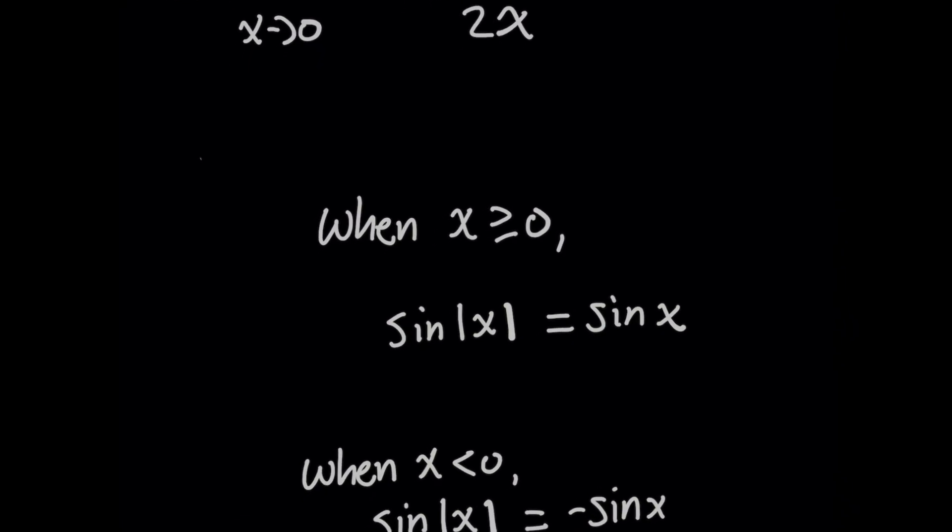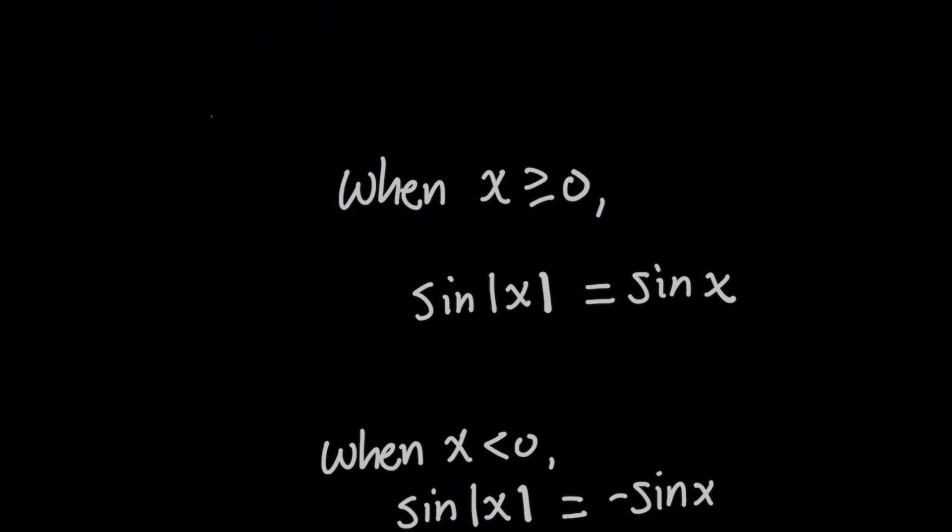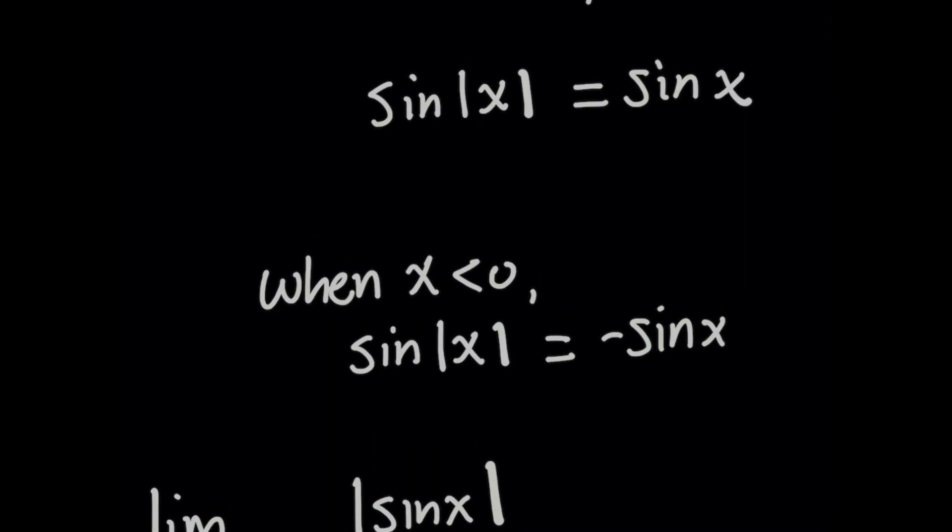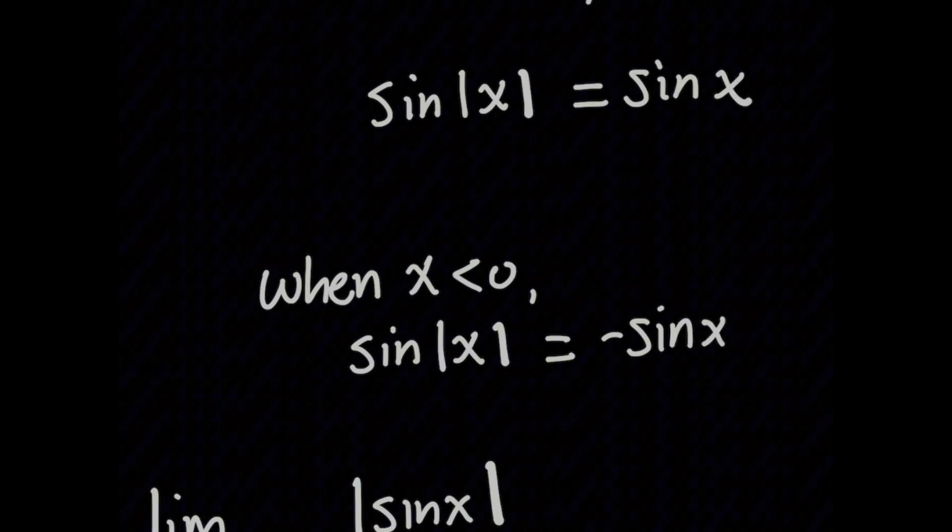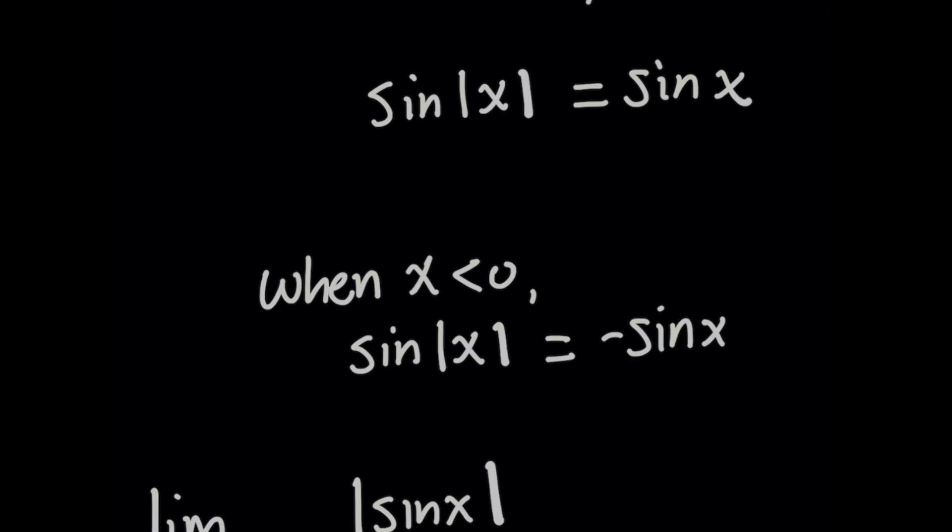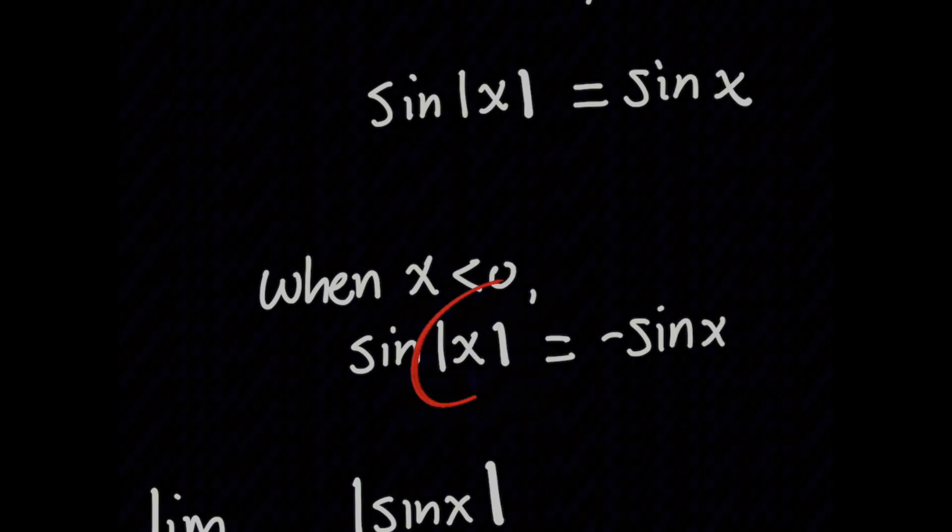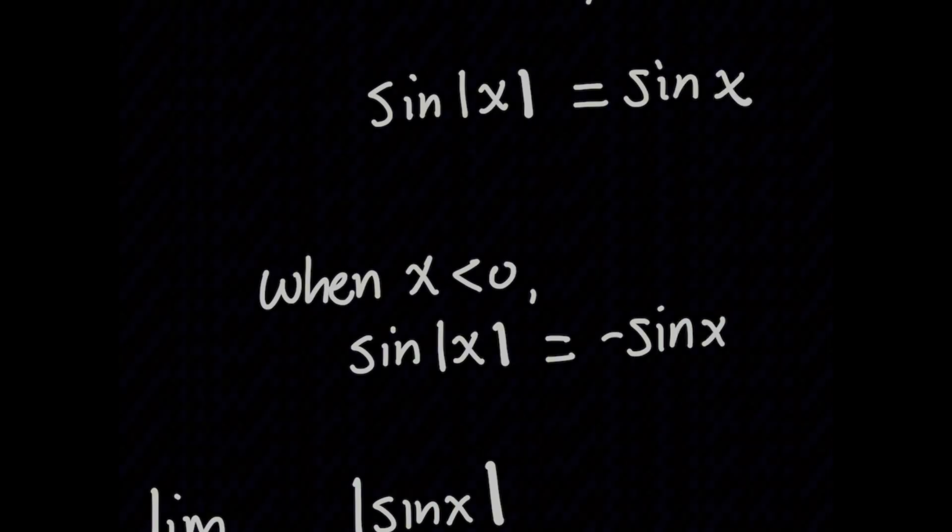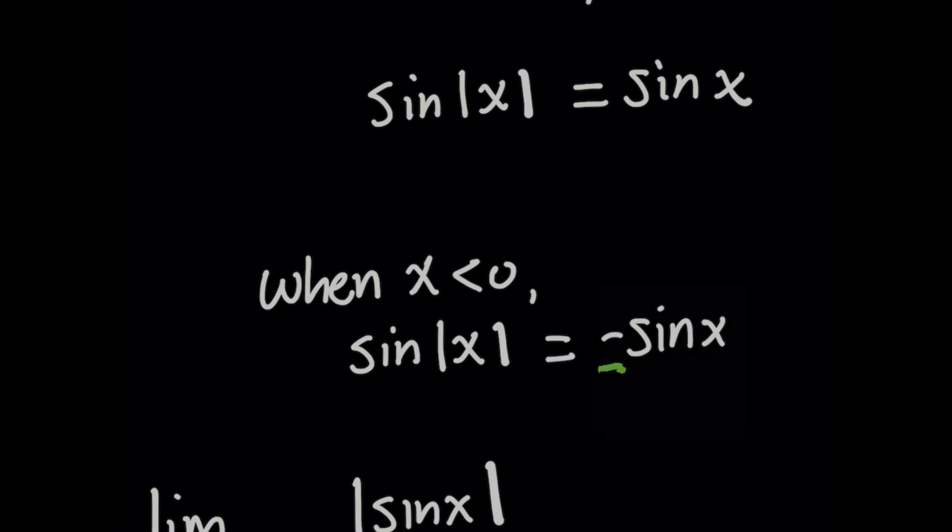Now for the case where x is strictly negative, in other words, it's less than zero, you got to be a little bit careful here because by inspection, you might goof this one up. But think about it visually on the unit circle. Imagine you're at the origin, and you're going in the negative direction just under the origin. When you're just under the origin, your y coordinate is negative. But because we have an absolute value here, it flips the sign. So we can take sine of absolute value of x and rewrite it as just negative sine of x.